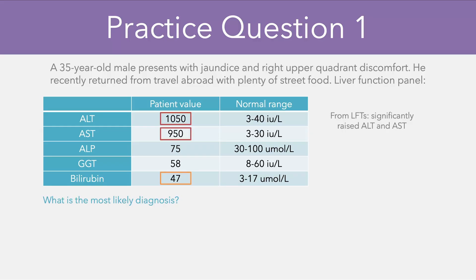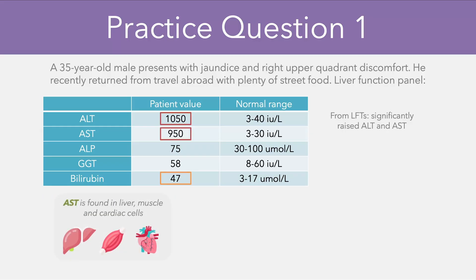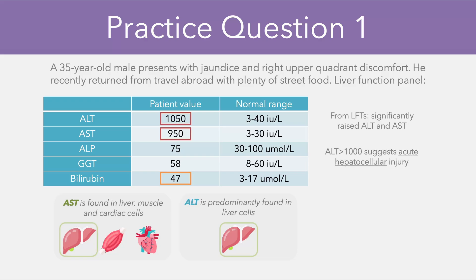Going back to first principles, we know that AST is found in the liver, muscle, and cardiac cells, while ALT is found predominantly in the liver only. Because the AST and ALT values are both elevated, this makes it more likely for there to be some form of liver pathology. And as the level of ALT is greater than 1000, it's suggestive of an acute hepatocellular injury. Using details from the travel history, the most likely diagnosis in this case is therefore hepatitis A.